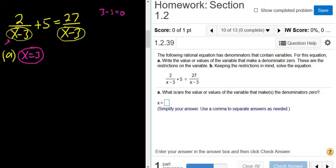Another way to do it is you just take the bottom and set it equal to 0. Then you solve for x, so you get x equals 3. So that's the number that makes the denominator 0.